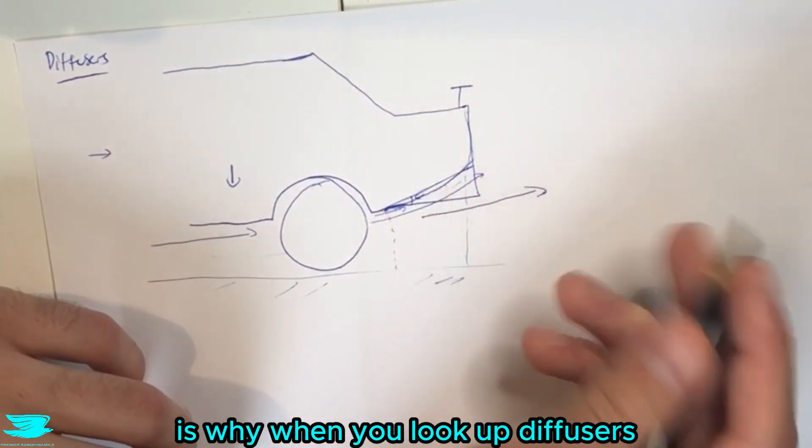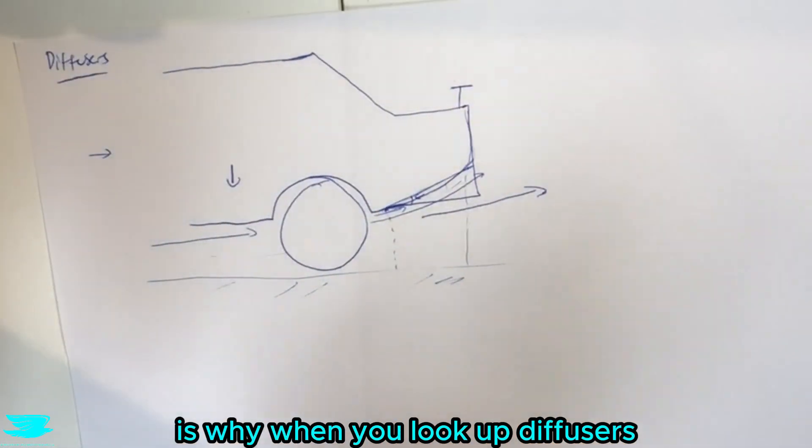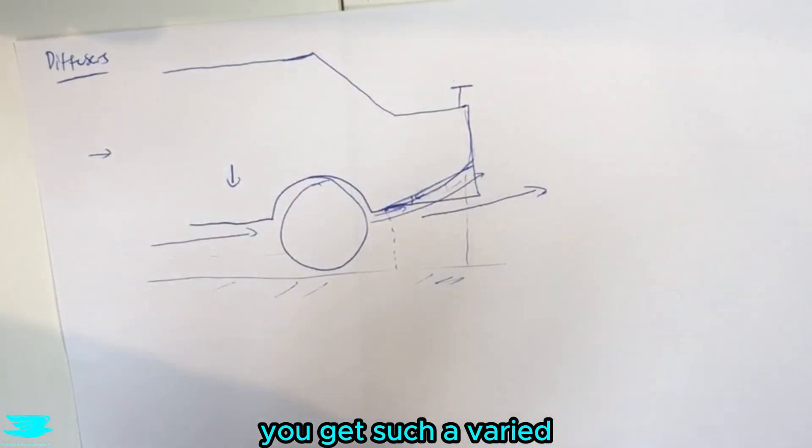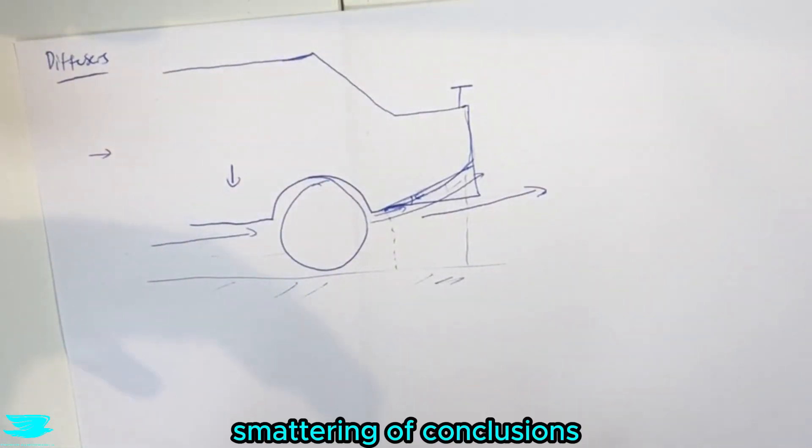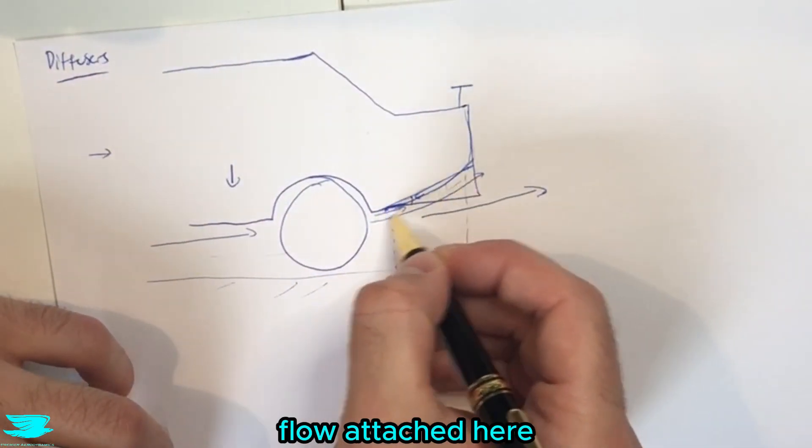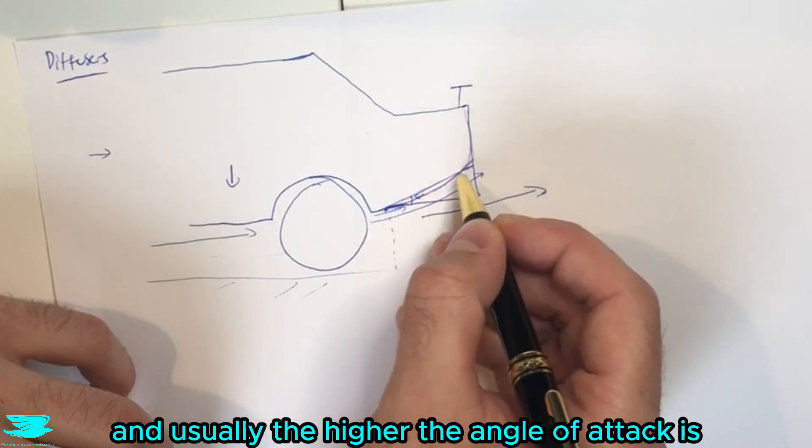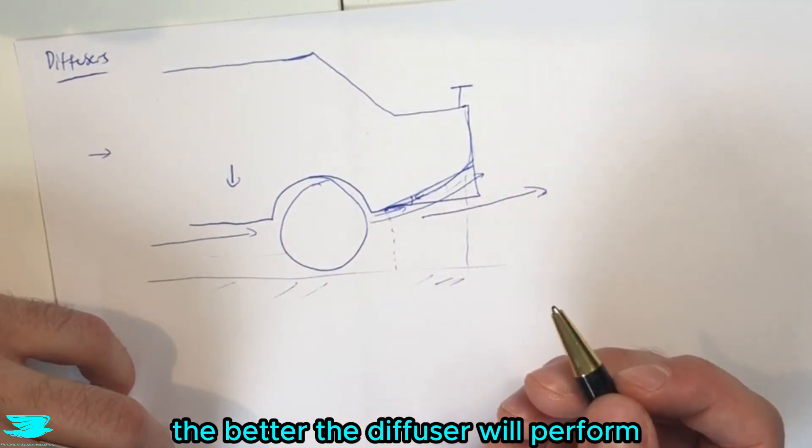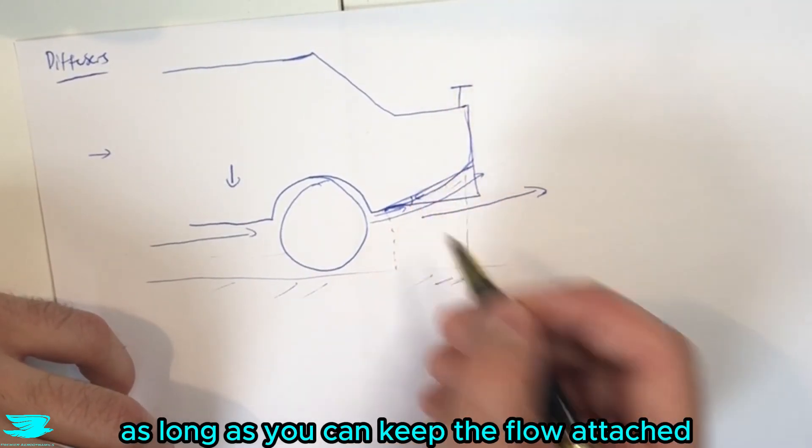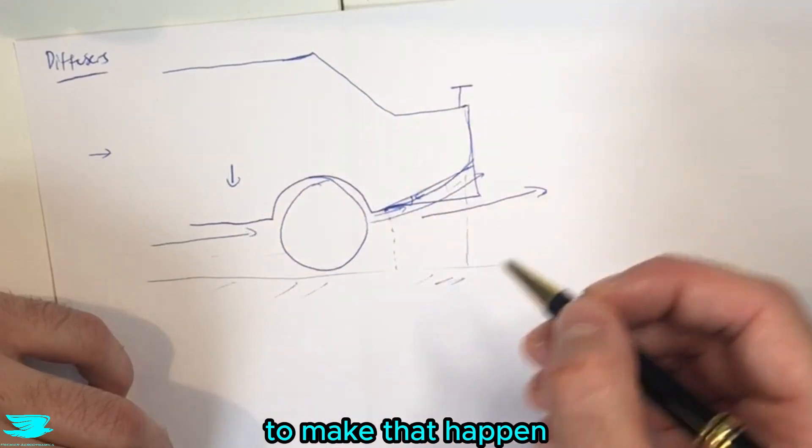And that is what we've gone through here is why when you look up diffusers you get such a varied smattering of conclusions. It really depends on the car and whether you can actually keep the flow attached here, and usually the higher angle of attack is the better the diffuser will perform as long as you can keep the flow attached and you have enough energy in the flow to make that happen.